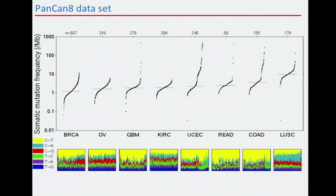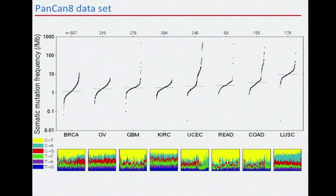Looking at the different mutation categories, C-to-A changes are prevalent in lung squamous — the typical signature for smoking. C-to-T transitions are prevalent across all tumor types, largely in the CpG context, which contribute to the high background mutation rate.